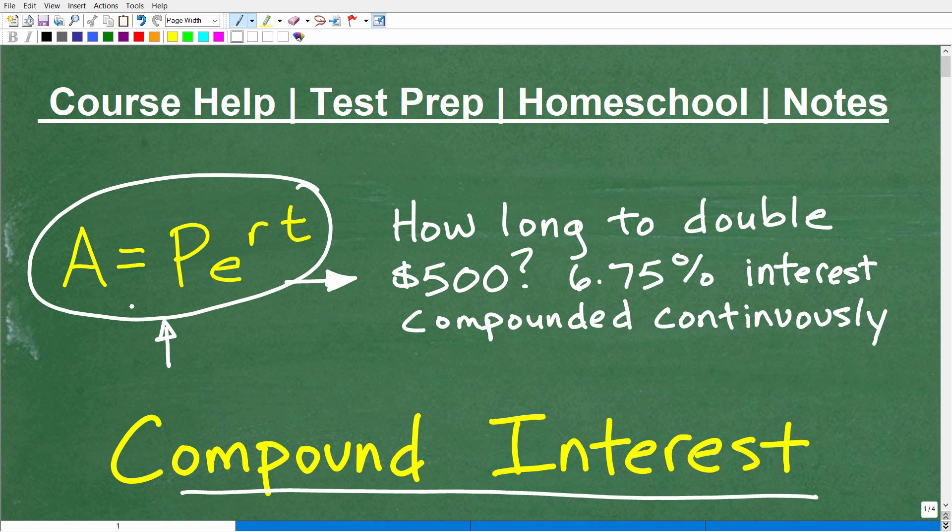As a matter of fact, let me read you the problem, and maybe you want to go ahead and take a shot at it. It says, how long to double $500 if our investment is at 6.75% interest compounded continuously?